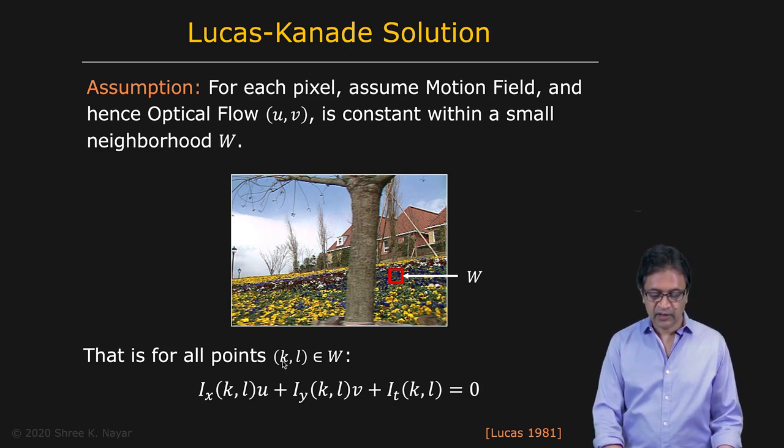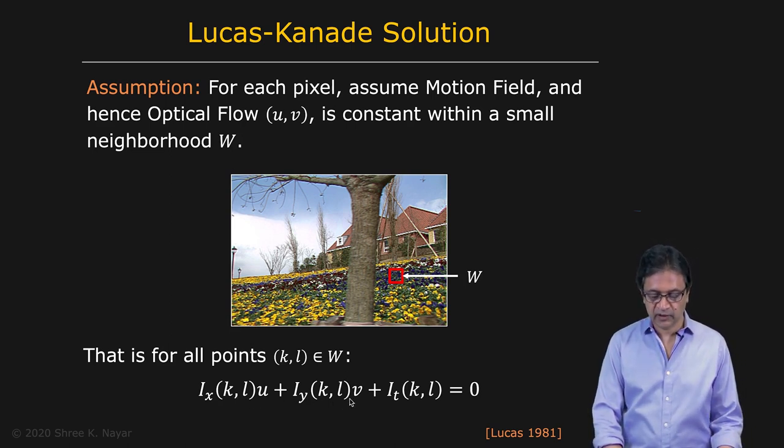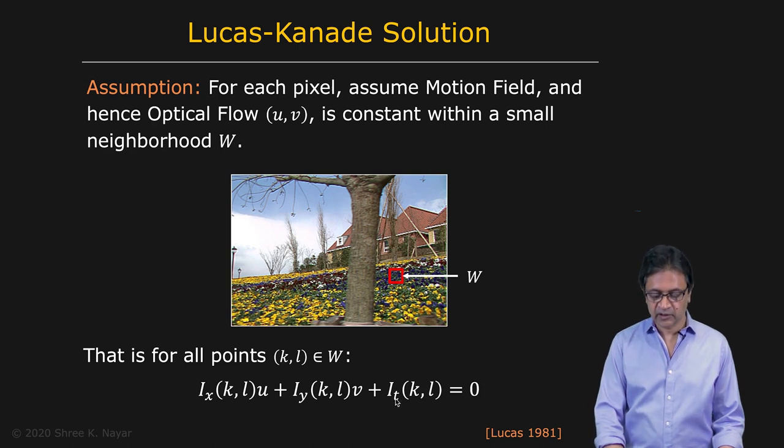let's say we take the point (k,l). We have the derivative of the intensity in the x direction times u plus the derivative of the intensity in the y direction times v plus the derivative in the time direction is equal to zero. And so that's one constraint that we have for the point (k,l).